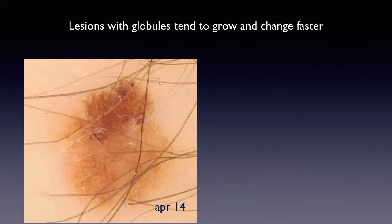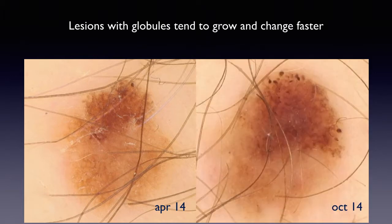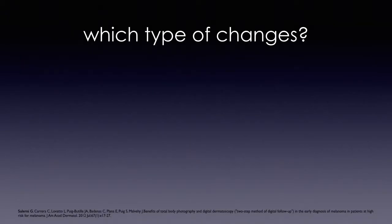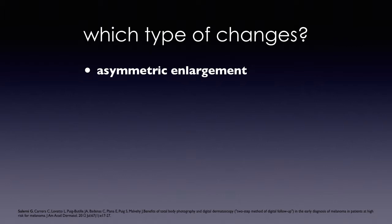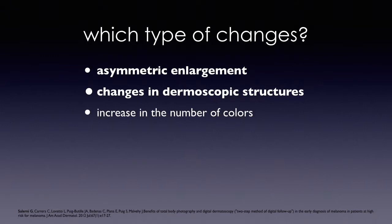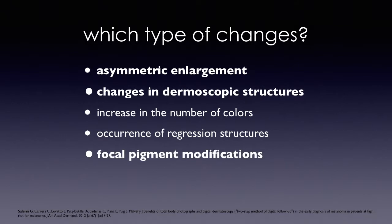Also keep in mind that lesions with globules tend to grow and change faster. Which type of changes do we consider for excision? Dr. Salerni and co-workers examined the so-called two-step method of digital follow-up, analyzing which type of changes usually lead to excision of lesions under follow-up. First of all, we have asymmetric enlargement, then changes in the dermoscopic structures, increase in the number of colors, occurrence of regression structures, and also focal pigment modification.